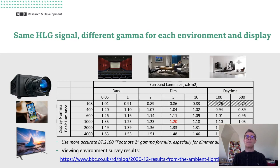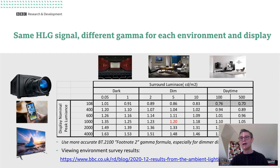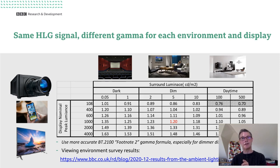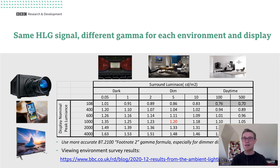Taking those two aspects together: with HLG we have one signal, and simply by changing the OOTF gamma implemented within the display, we can present that signal on a range of different brightness displays across a range of different viewing environments. For example, the gamma value of 1.2 highlighted in the table in red is for a reference display in a reference viewing environment with a 5 cd/m² surround. That same signal can be put on a laser projector at 108 cd/m² in a very dark environment with a 0.05 cd/m² surround using a gamma of 1.1, and we get remarkably good pictures that look just like those on the TV monitor in the reference viewing environment. We've done that demo several times — some of you may have seen it at IBC. For more on different viewing environments, do read the BBC blog linked at the bottom of this slide.